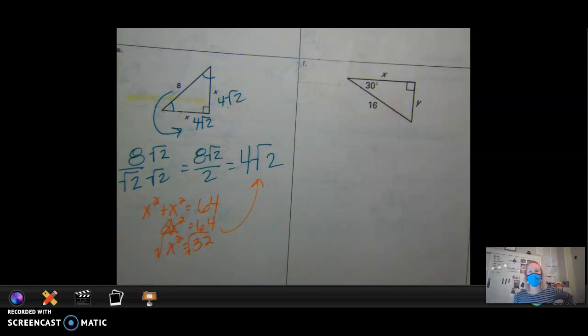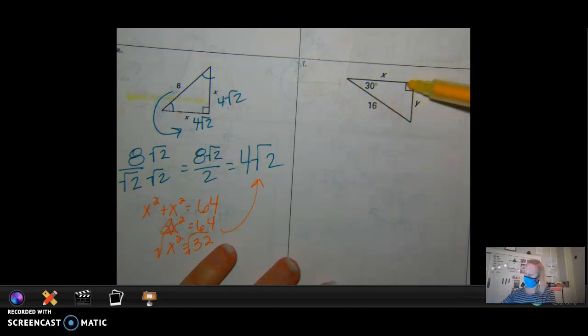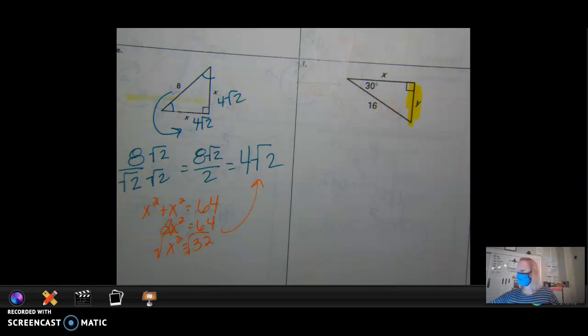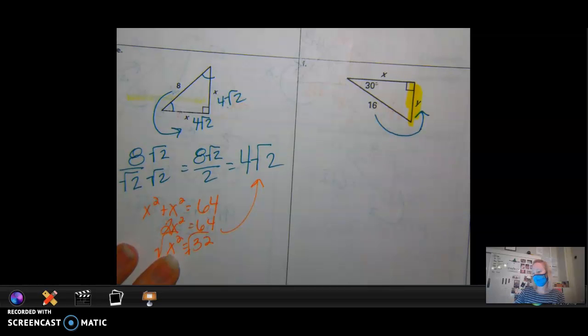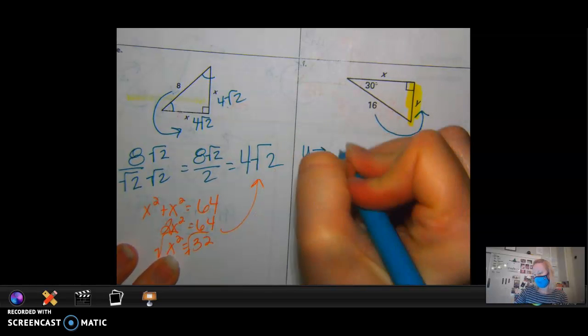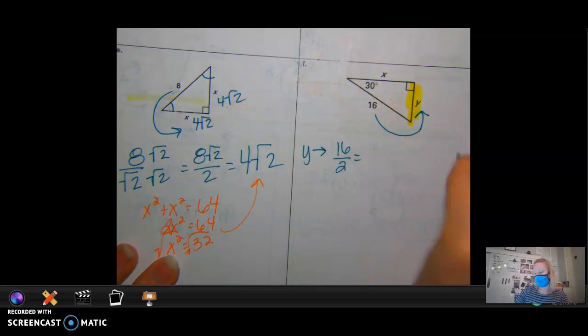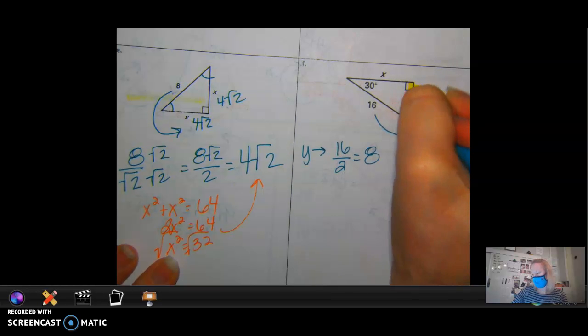F is a 30, 60, 90. Which side did they give me? Which side is that of that triangle? Long side, my hypotenuse. How do I go from long to short? So I need to do 16 divided by 2, which is how much? So this is 8.